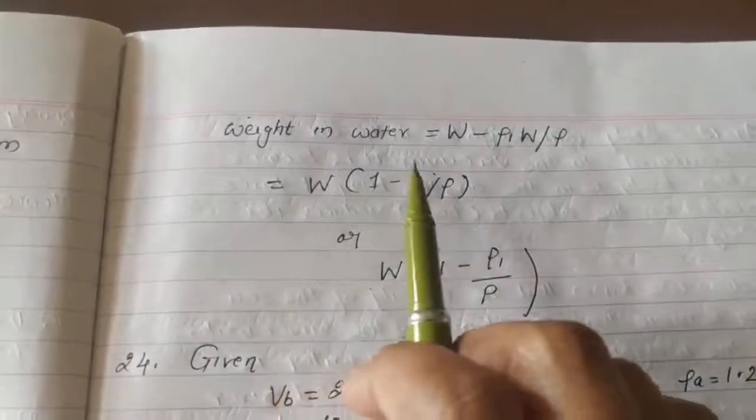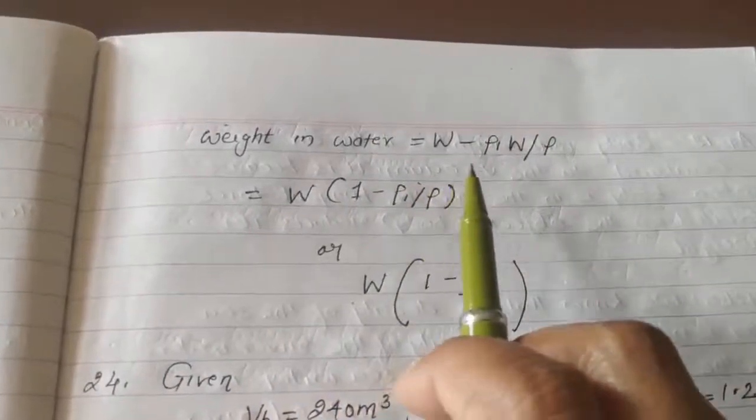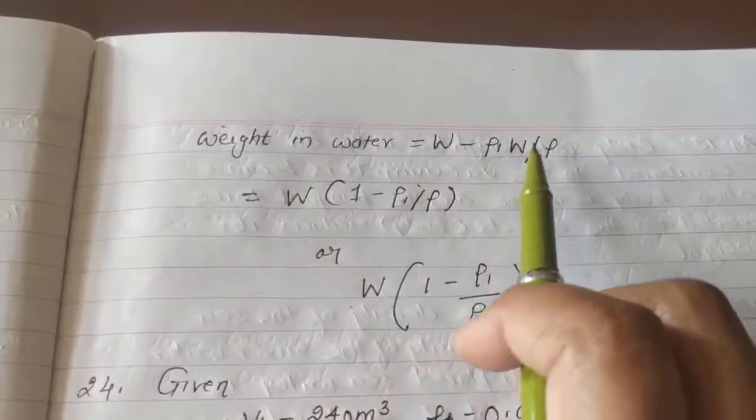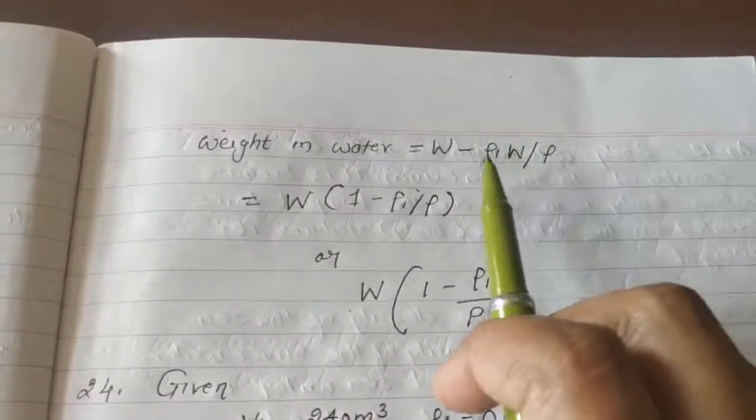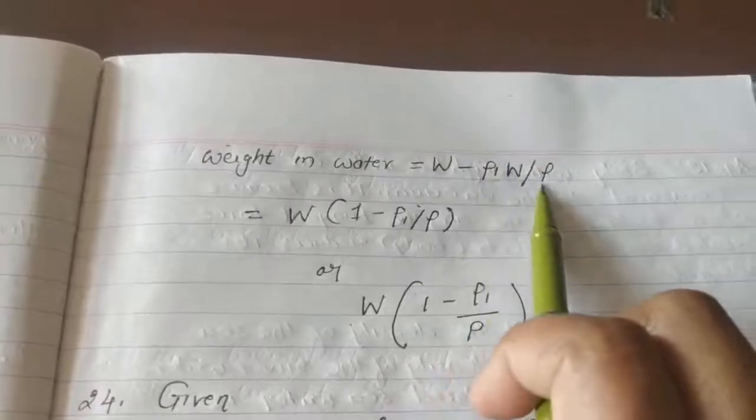Weight in water is equal to weight minus rho l W divided by rho. Again I am telling this is the density of liquid and this is the density of object.